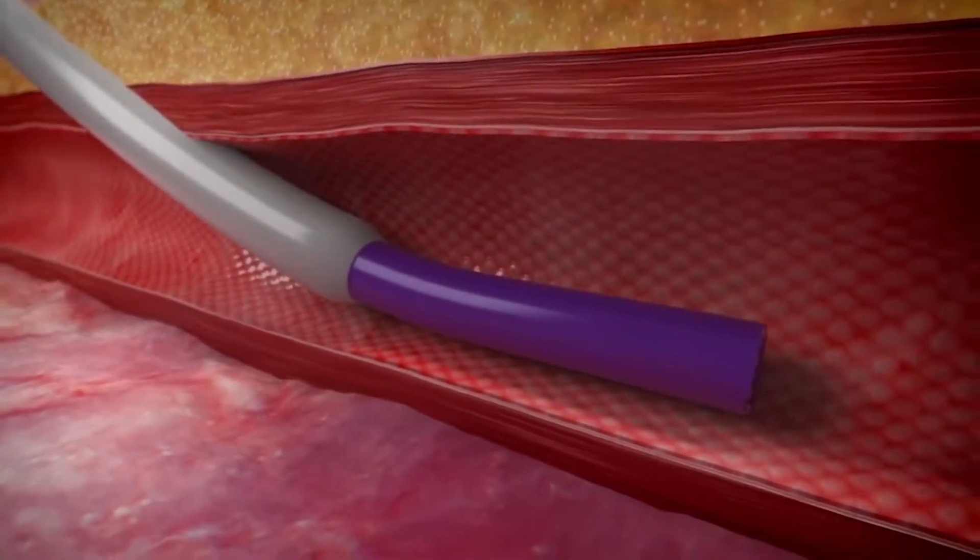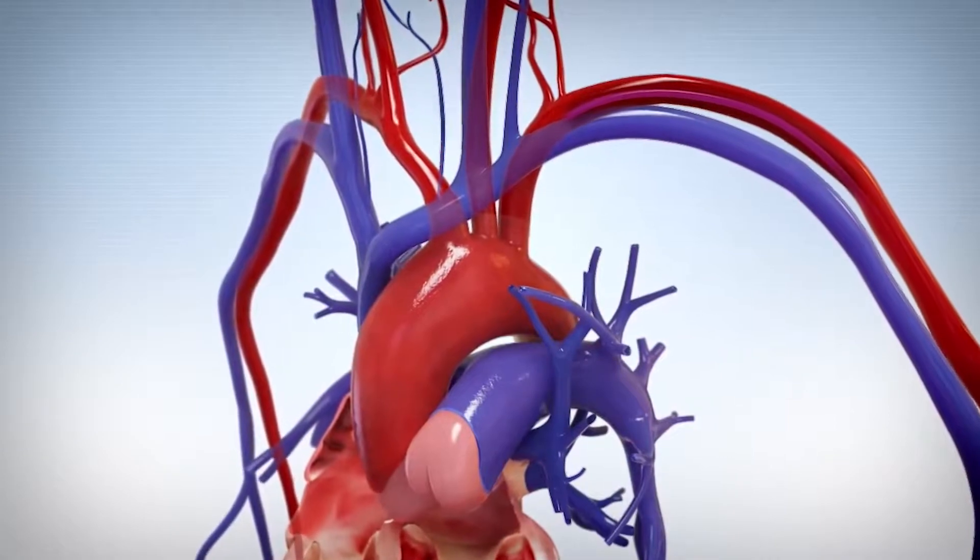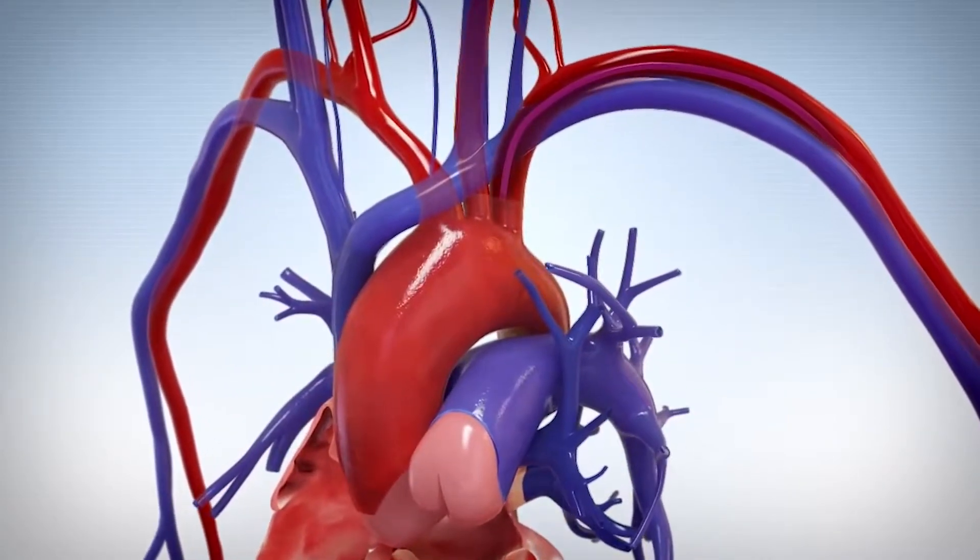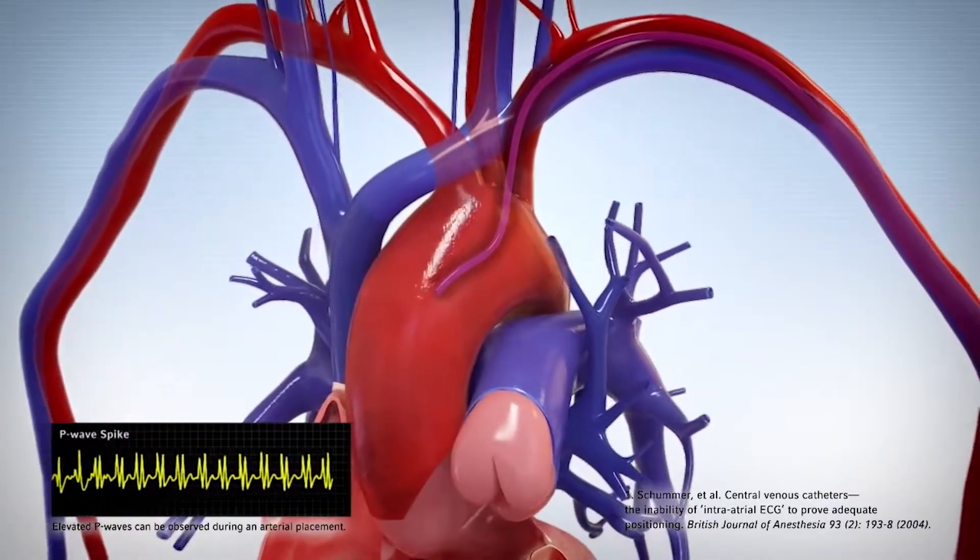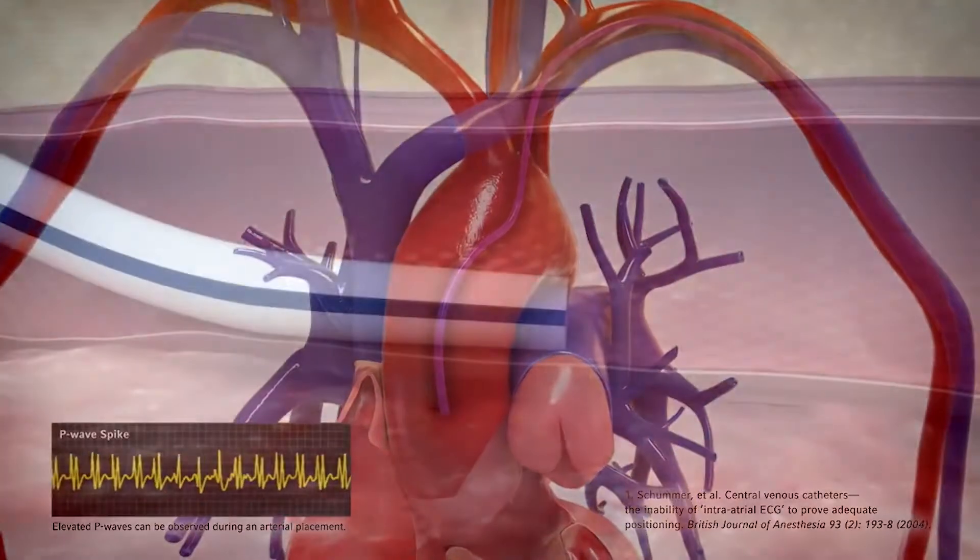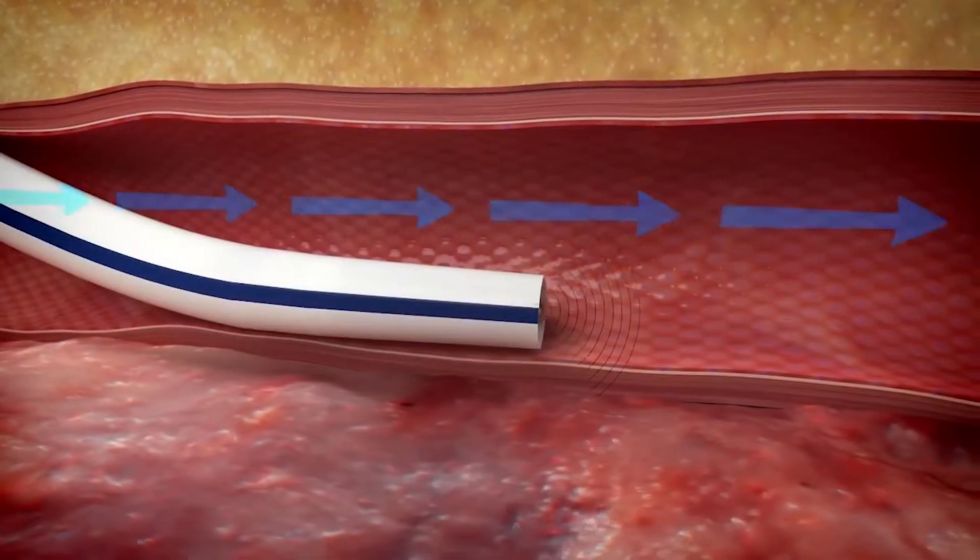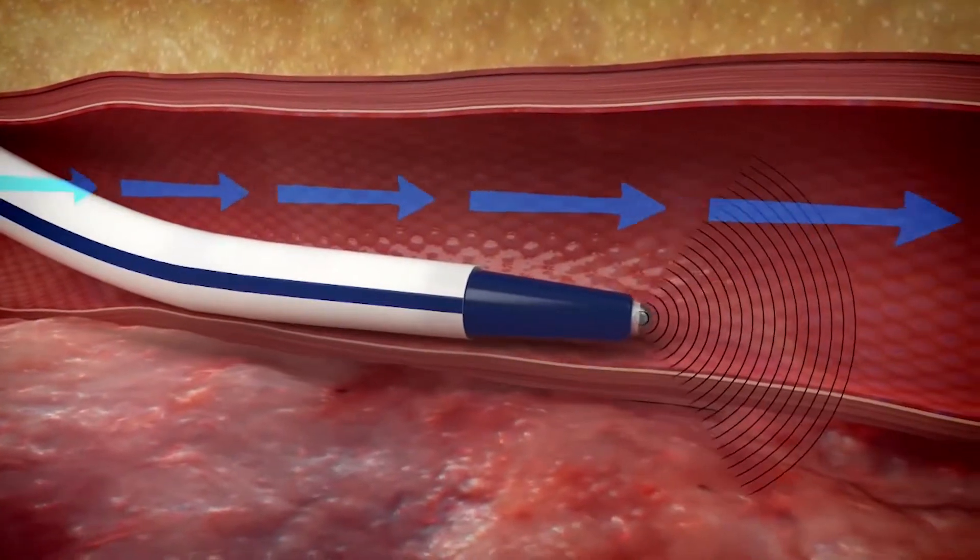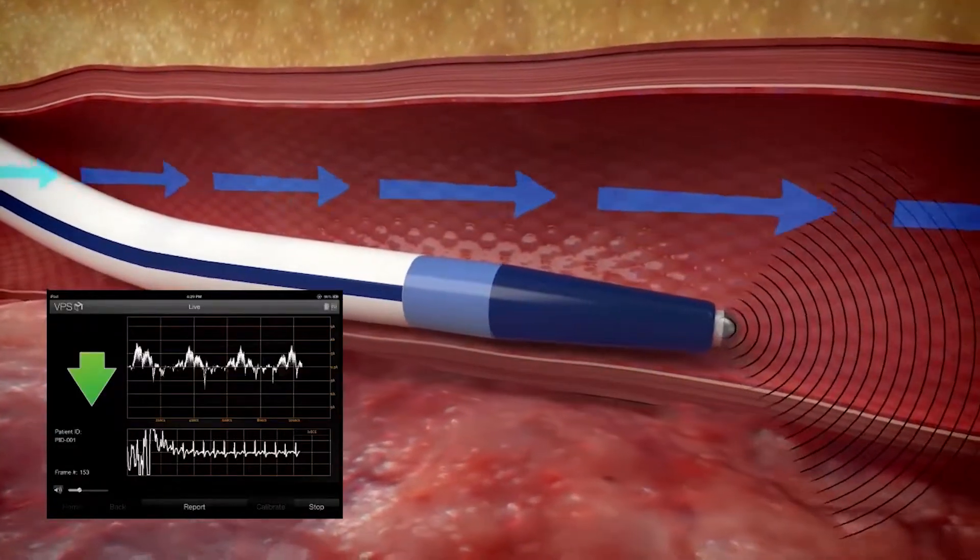In the unlikely event a catheter is placed into the aorta, it can cause serious complications including mortality. Unlike ECG only systems, as the Arrow VPS stylet enters the vessel, it immediately begins to monitor blood flow direction.